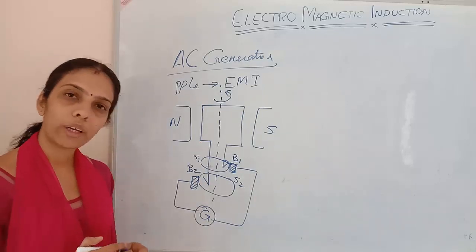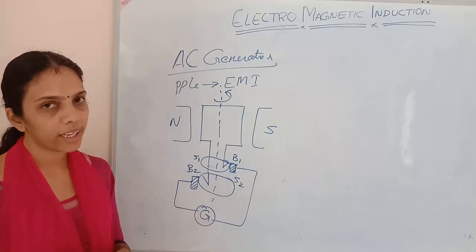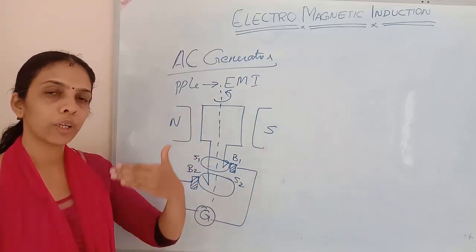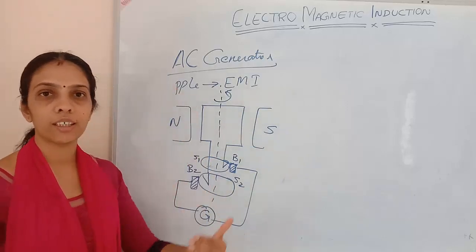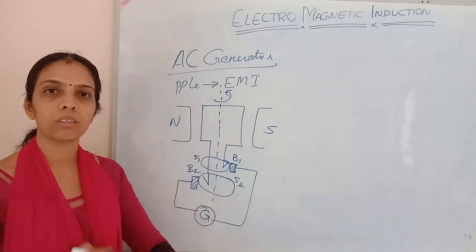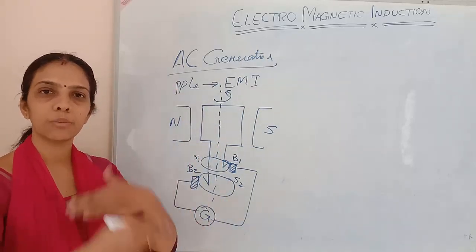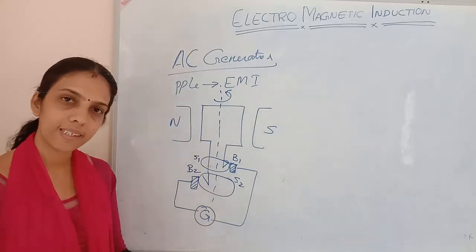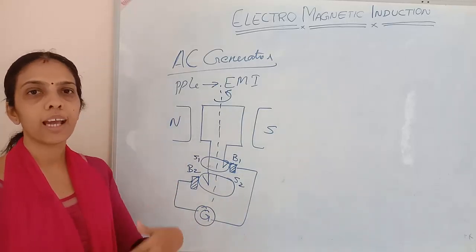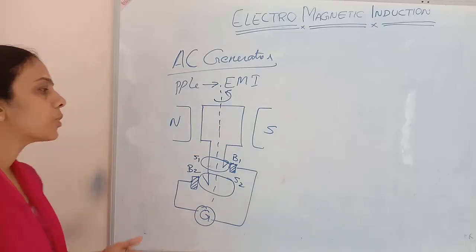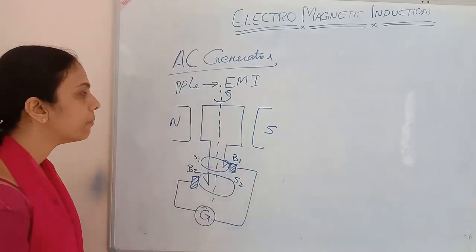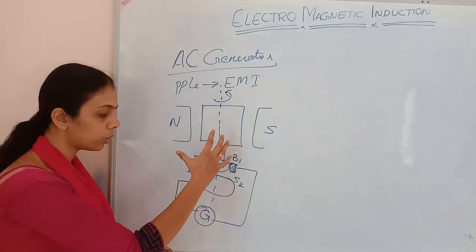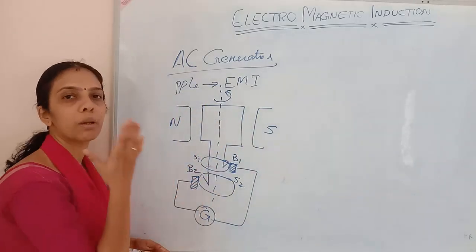How will the coil rotate? In a hydroelectric power plant, the coil is rotated with the help of water — when water falls on the turbine, it rotates. If it is a steam engine, steam helps it to rotate. When the coil is rotating, current will be generated.